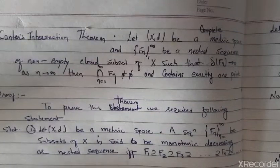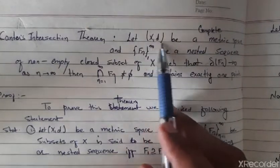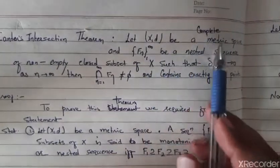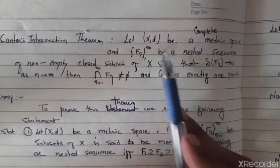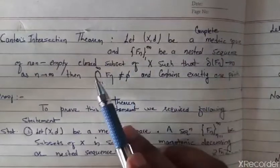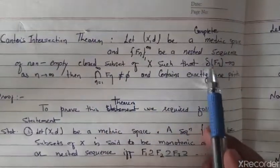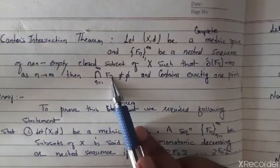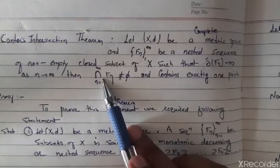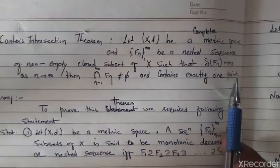Good morning students, today we talk about the Cantor Intersection Theorem. The statement is given here: let S be a complete metric space, and let Fn, a sequence where n varies from 1 to infinity, be a nested sequence of non-empty closed subsets of X, such that the diameter of Fn tends to 0 as n tends to infinity. Then the infinite intersection of Fn is non-empty and contains exactly one point.